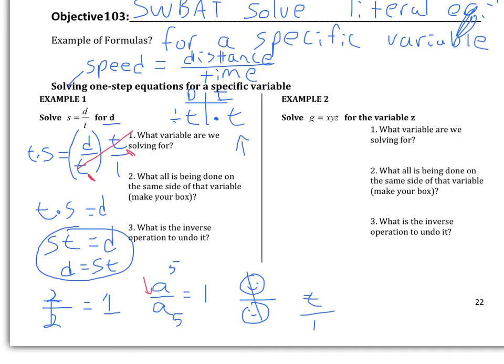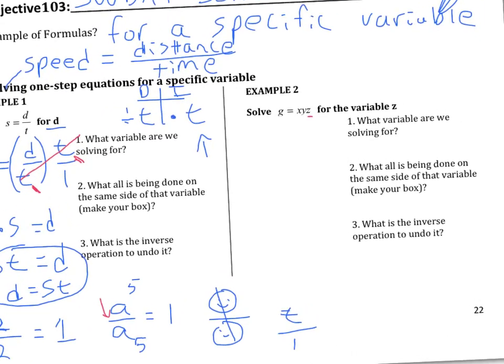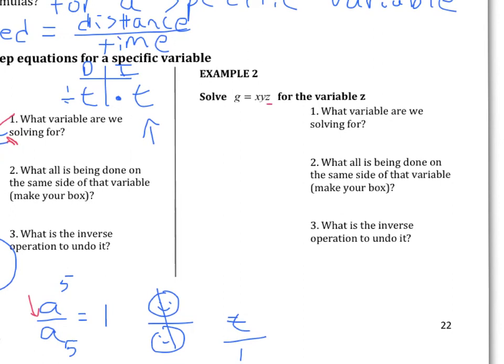Let's look at example 2. It says solve the equation G equals XYZ for the variable Z. So we're solving for Z. So we have to ask ourselves, what all is being done to Z? If we look at the same side of Z, we have an X, a Y, and a Z.